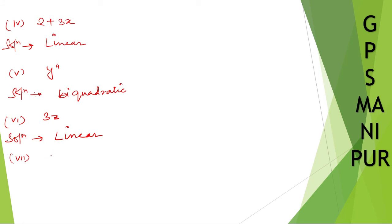Room number 7: x minus x cube. Solution - here the power of x is 3, so it is cubic.